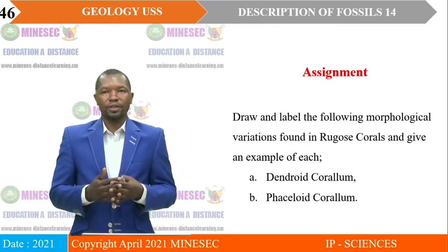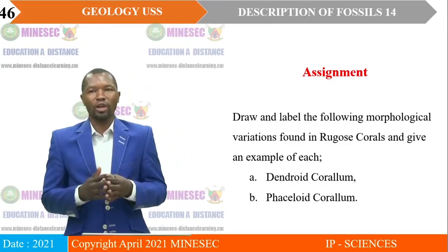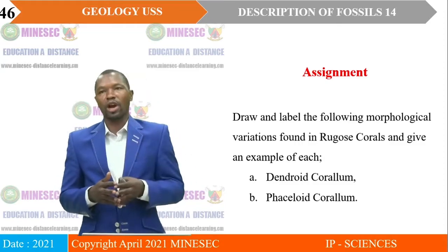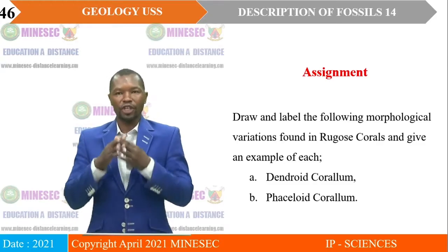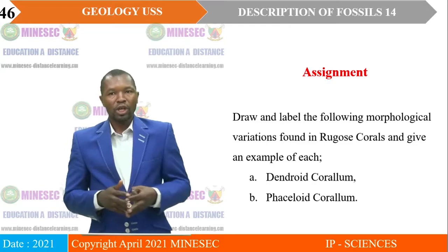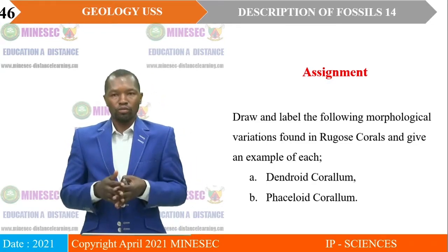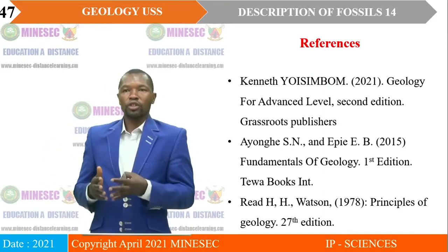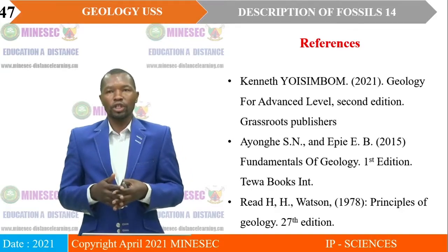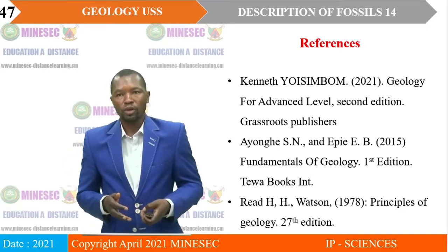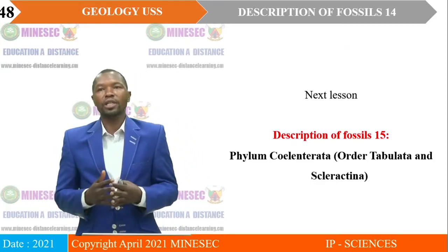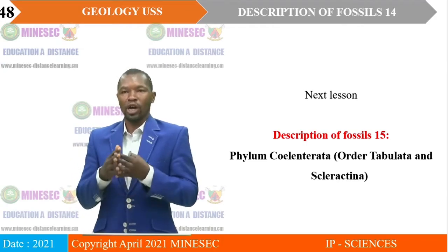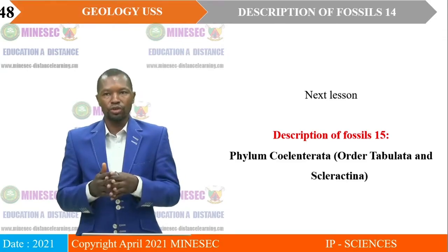Now, after we have gone through our lesson, it is important that we take some work to do at home. While at home, you shall draw and label the following morphological variations found in Rugose corals, and give an example of each: A — Dendroid corallite, and B — Fascicloid corallite. You can also read texts like Geology for Advanced Level, Fundamentals of Geology, and the Principles of Geology. They will help you do your work at home. We have come to the end of our lesson. Our next lesson will be on Description of Fossils 15, where we shall still concentrate on Phylum Coelenterata — this time handling Order Tabulata and Sclerotina. See you in our next lesson.